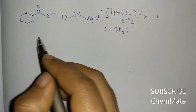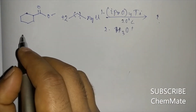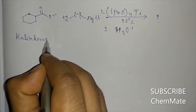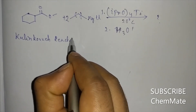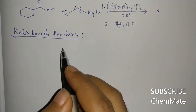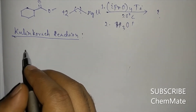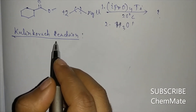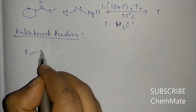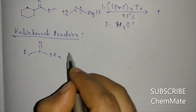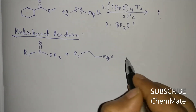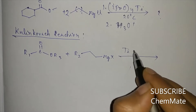This is a very important name reaction called the Kulinkovich reaction. In the Kulinkovich reaction, an ester is treated with two equivalents of Grignard reagent with a titanium isopropoxide catalyst.